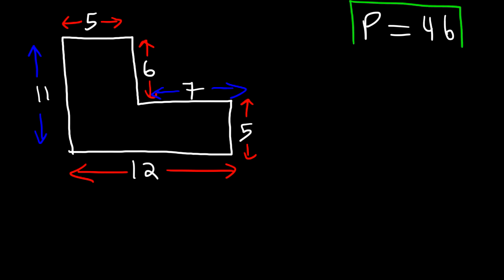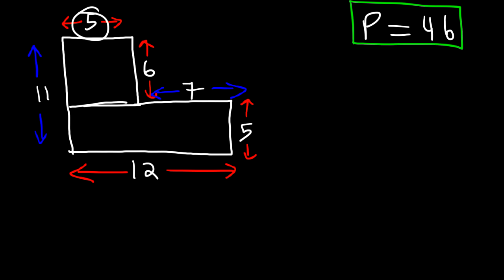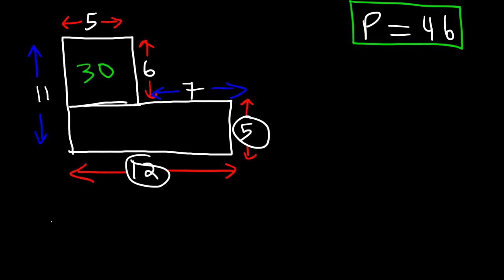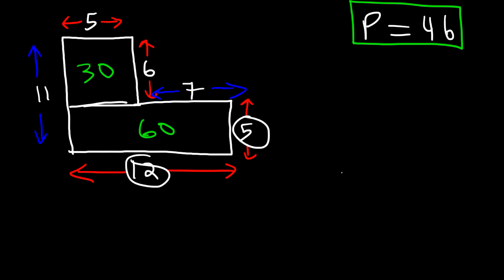Now let's find the area of this figure. Let's turn this into two rectangles. The area of the first rectangle is simply length times width: 5 times 6, so it's 30 square units. Now the area of the second rectangle is also length times width: 5 times 12, which is 60. To find the total area, we need to add up 30 plus 60, which is 90. So that's the area of this figure.